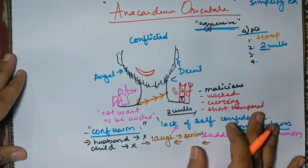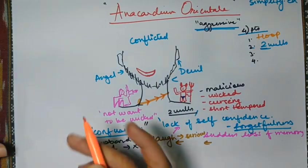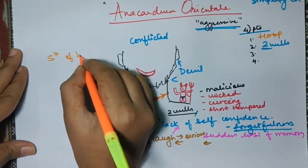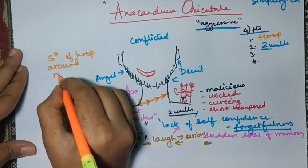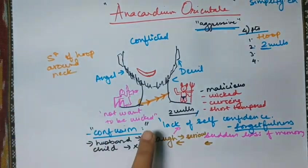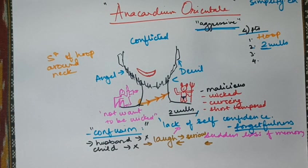This we would classify as a characteristic keynote symptom. When there is a hoop sensation around the neck, we will get similar symptoms as Lachesis where the person generally doesn't want to wear anything tight around the neck.